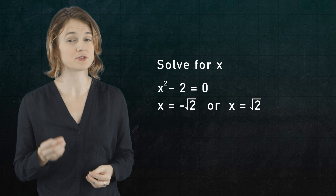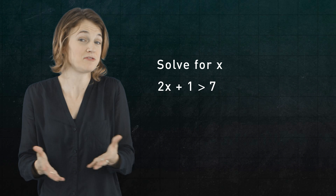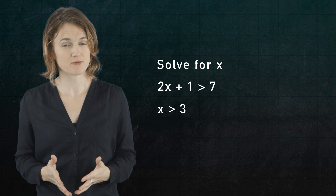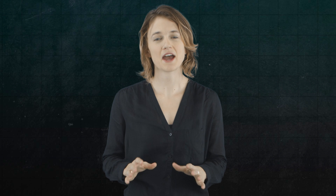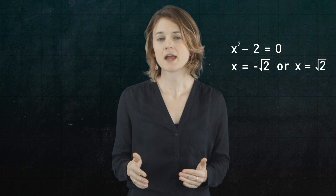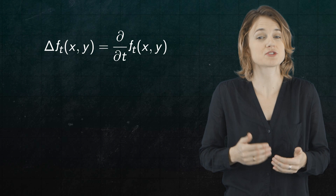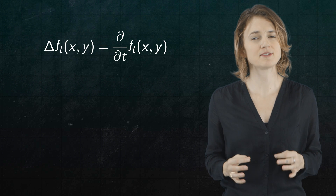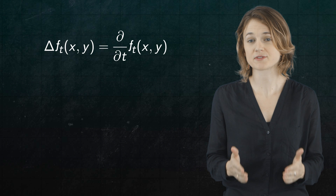Or the equation x² − 2 = 0 has two solutions: x = −√2 and x = +√2. Or 2x + 1 > 7 has infinitely many solutions — all x greater than 3. The unknown in these equations was always a number or multiple numbers. Now, the unknown in a differential equation is a function or several functions. Just as x² − 2 = 0 describes certain numbers, a differential equation describes certain functions. This is the heat equation, which describes a certain type of function f. Given its name, we should expect those functions f that it describes to model heat diffusion. We want to figure out what those functions are.